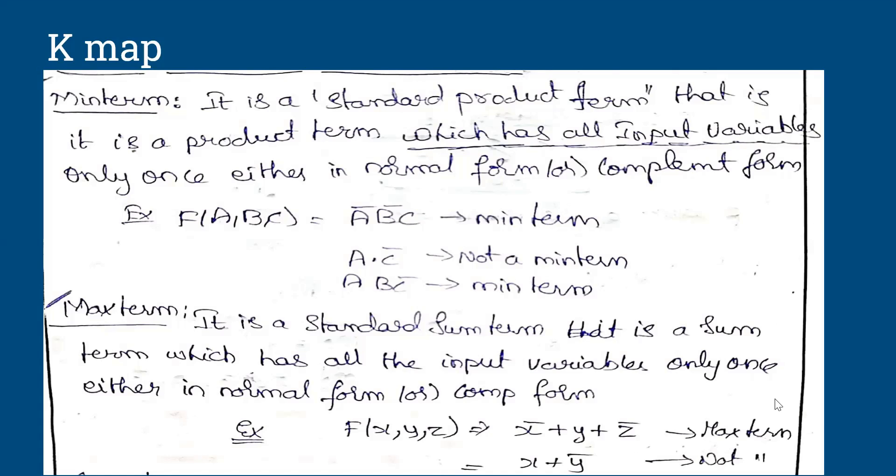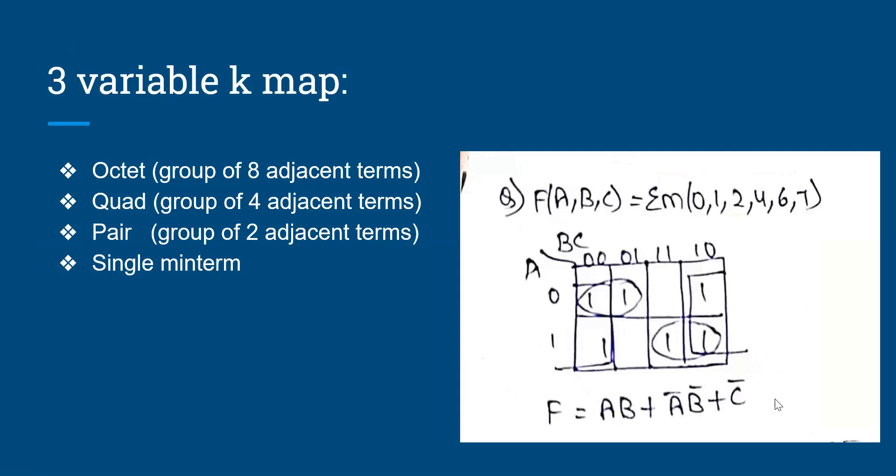Next moving on to three variable K-map. With K-map we can easily solve three variable, four variable, five variable K-maps with pen and paper, but seven to eight is difficult but we can solve. So three variable K-map, what are the possible expressions? Octet can be formed, quad can be formed, pair can be formed, single minterm.